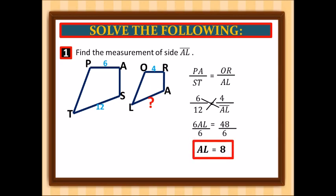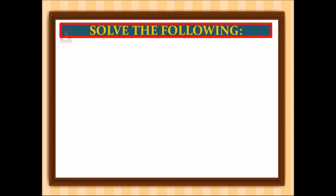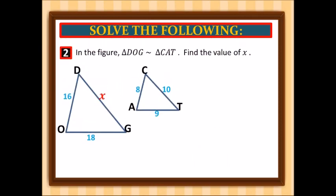Okay, now let's proceed to the second example. In the figure, triangle DOG is similar to triangle CAT. We are going to find the value of x. Again, we are going to create our proportional equation.